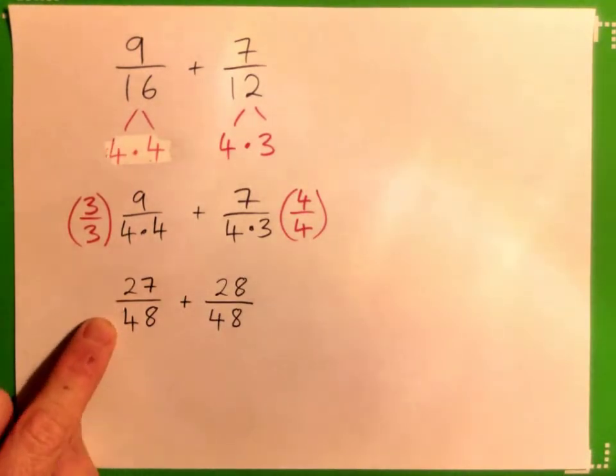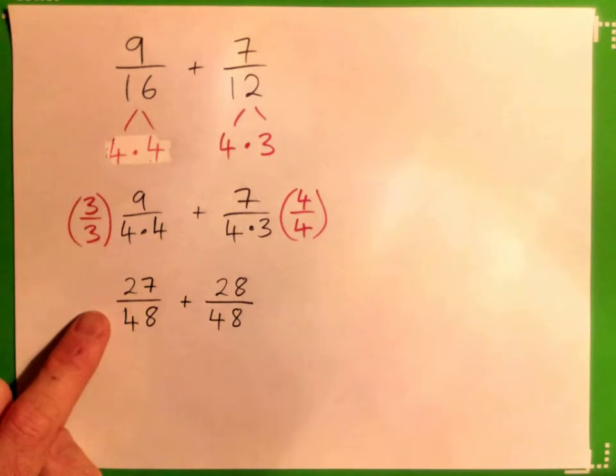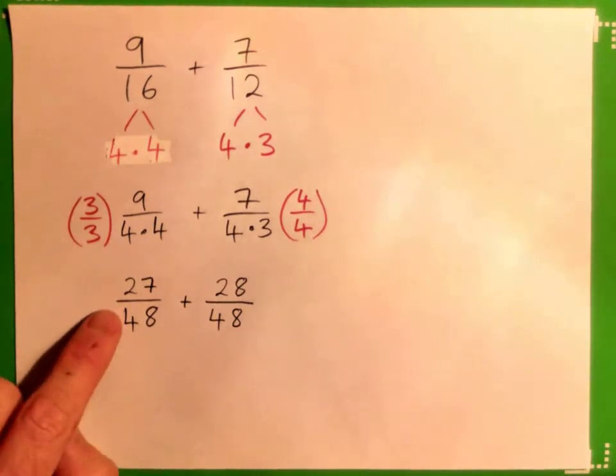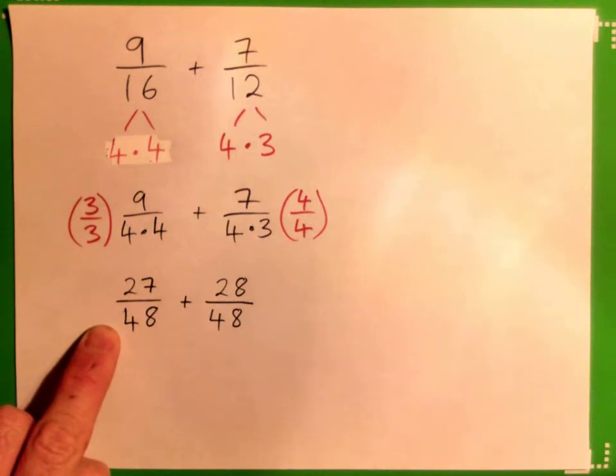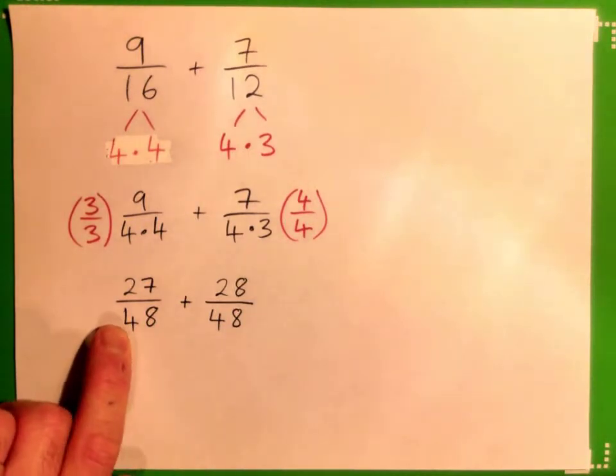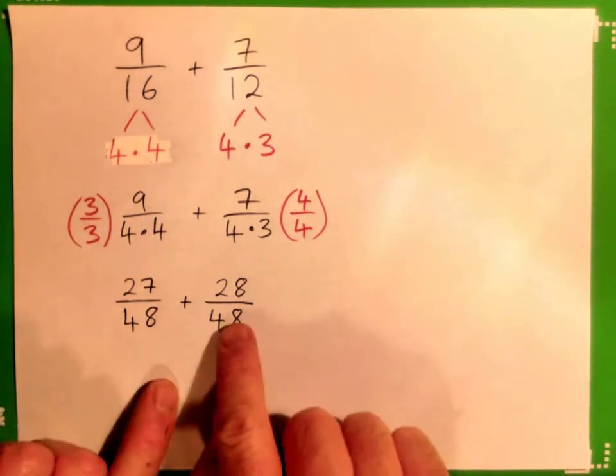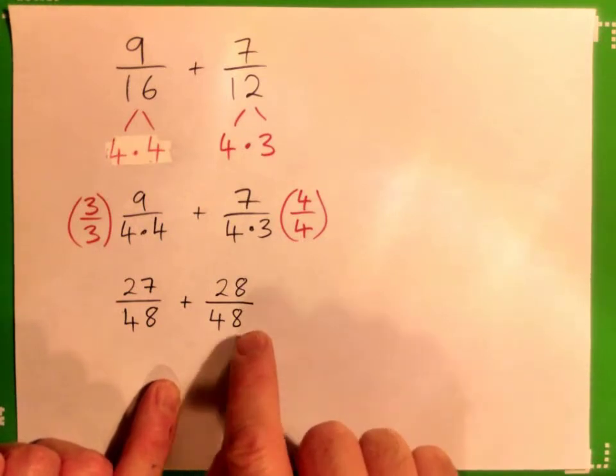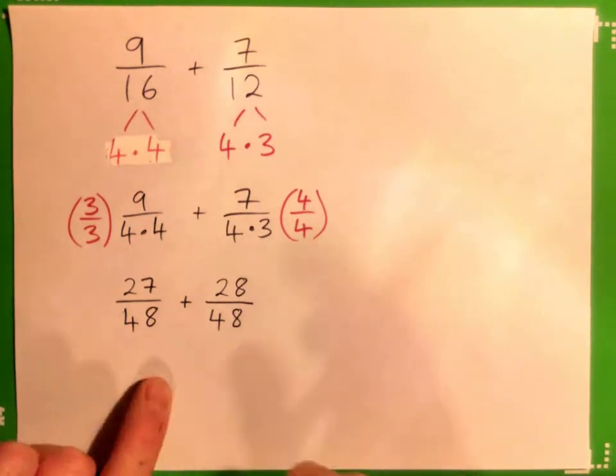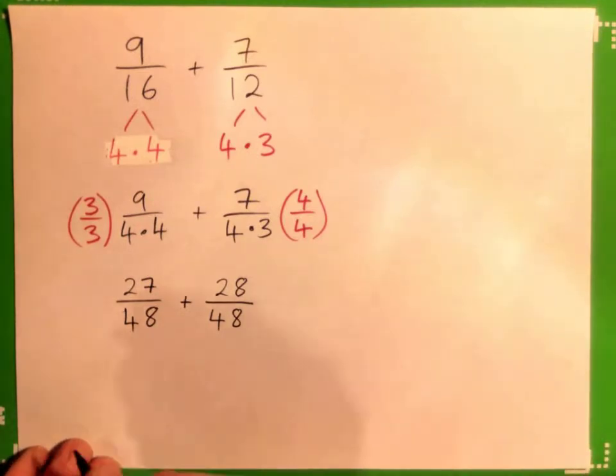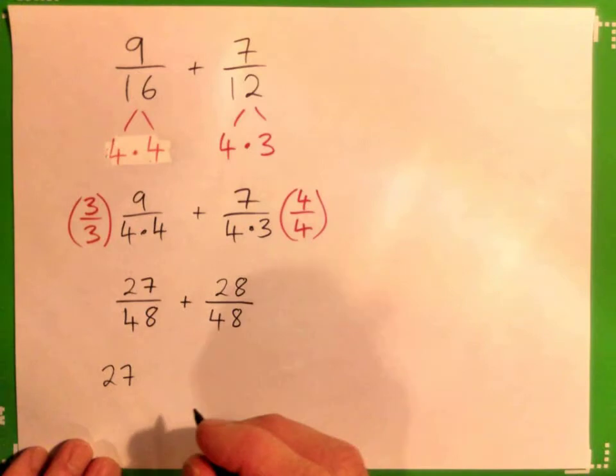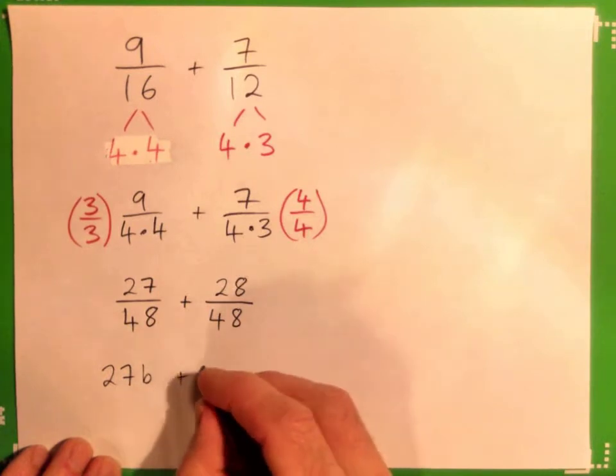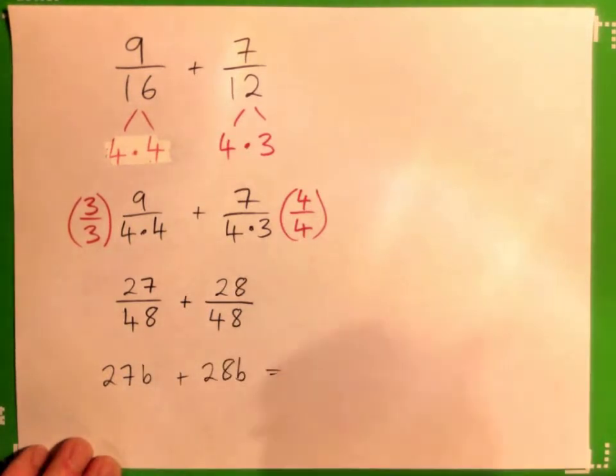So how would you describe that fraction? This one on the left, what would you call that one? Yeah, and the name of it is 27 forty-eighths. And what's the name of this fraction here? Yeah, 28 forty-eighths. Good job. So we have 27 forty-eighths and 28 forty-eighths, and it's kind of like adding like terms. It's like having 27 bananas plus 28 bananas.